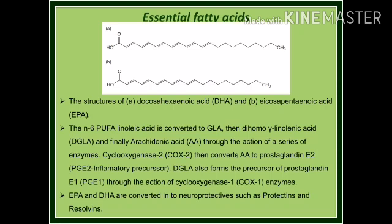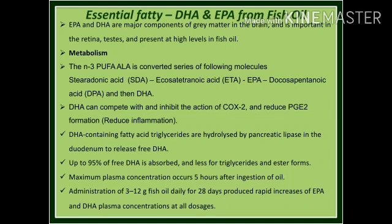The COX-2 enzyme (cyclooxygenase-2) converts arachidonic acid into prostaglandin E2, which is the main inflammatory precursor in the body. DGLA is also converted to prostaglandin E1 with the help of cyclooxygenase-1 (COX-1). EPA and DHA are converted into neuroprotectives such as protectins and resolvins. EPA and DHA are very important components of the gray matter in the brain and of the retina.